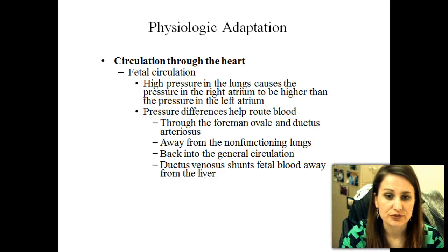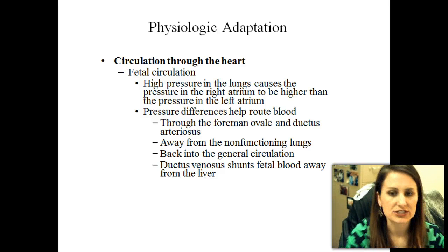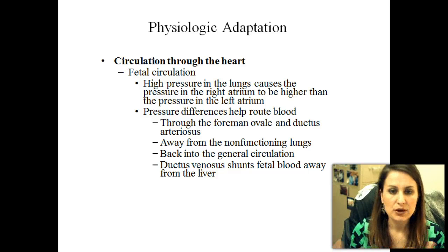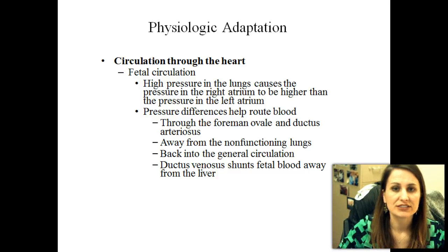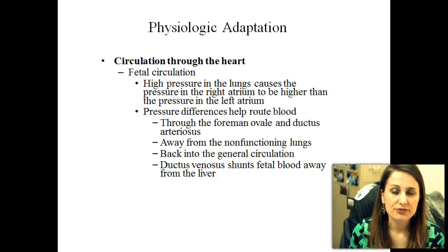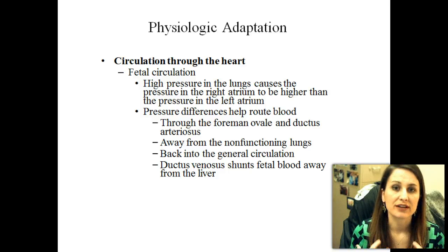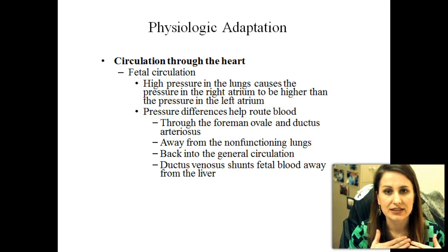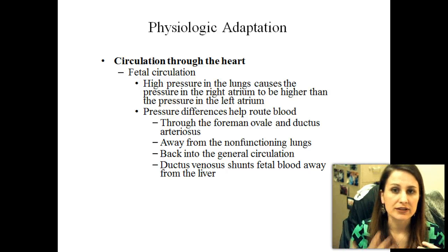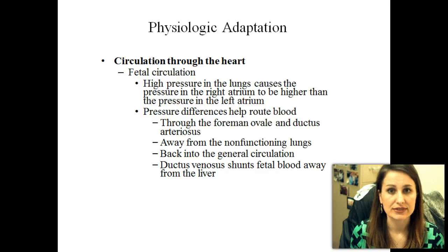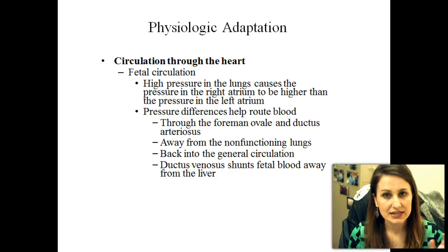Next we're going to look at circulation through the heart. The fetal circulation is a little bit different than yours and mine. Whenever they're in utero, remember, they aren't really having to use their lungs. So they have three different shunts, which we will talk about. Those shunts just shunt the blood away — for example, away from the lungs. There is high pressure in the lungs because there's so much fluid there that it causes the blood, whenever it comes to the lungs, to not need to go through that process. They're getting their oxygen from the placenta.